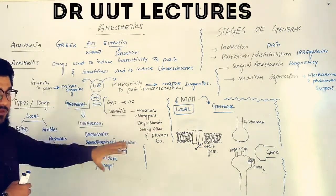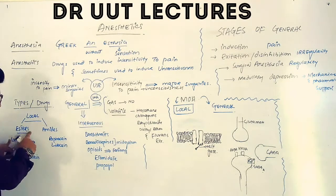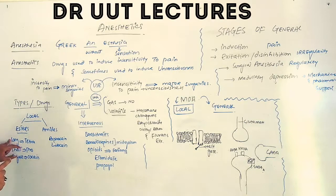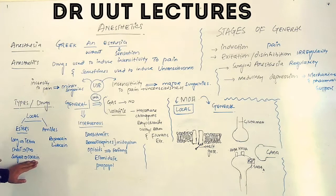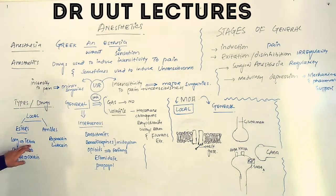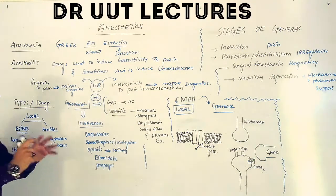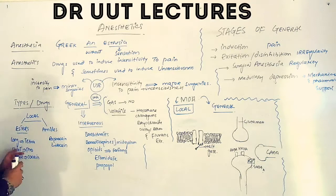In local anesthetics, esters are classified as surface-acting, short-acting, and long-acting. The drug examples are: cocaine for surface-acting esters, tetracaine for long-acting esters, and for amides we have ropivacaine and lidocaine. It's easy to remember these because they all end with '-caine'.